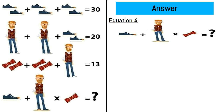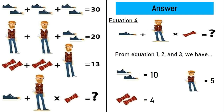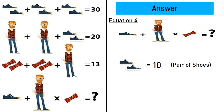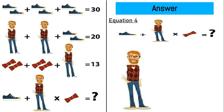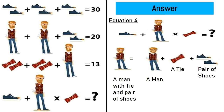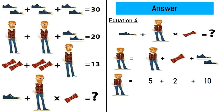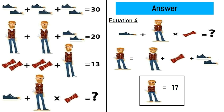Moving on to the last equation, equation number 4. From equations 1, 2 and 3 we have: a pair of shoes is equal to 10, so a single shoe is equal to 5; 2 ties is equal to 4, so a single tie is equal to 2; and a man is equal to 5. The man in equation 4 is not similar to the man in equations 2 and 3 — he has a tie and a pair of shoes. So a man with tie and pair of shoes equals a man plus a tie plus a pair of shoes, which is 5 plus 2 plus 10, equal to 17.